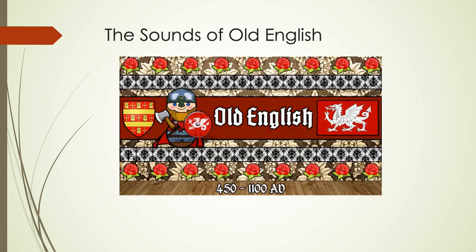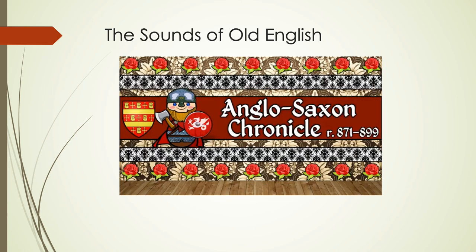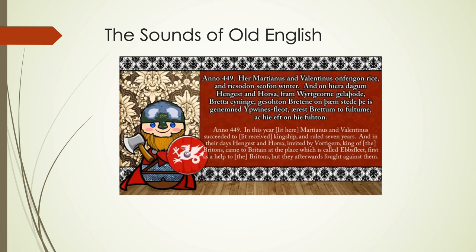The Old English Language — from the Anglo-Saxon Chronicle: 'Her Martianus and Valentinus onfengon rice and rixodon seofon winter and on heora dagum Hengest and Horsa fram Wyrtgeorne gelaðode Bretta cyninge gesohton Bretene on þam stede þe is genemned Ypwinesfleot ærest Bretum to fultume ac hie eft on heora feondum fuhton.'